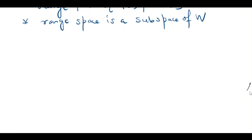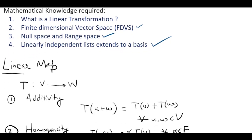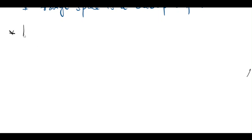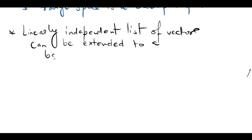Before going further into the proof, let me write down one important result which we are going to use. The result is: a linearly independent list of vectors in a finite dimensional vector space can be extended to a basis of the vector space. That is, you can incorporate more and more linearly independent vectors to form a list, and the resulting list will be a basis for the vector space.